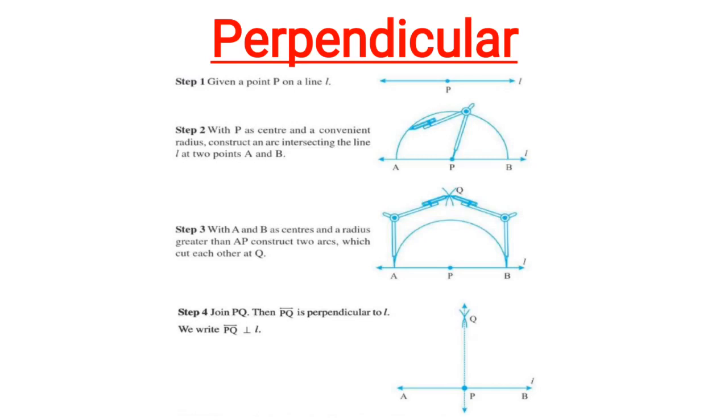Step 3: With A and B as center and a radius greater than AP, construct two arcs which cut each other at Q. Step 4: Join PQ. Then the line PQ is perpendicular to L. Thus we can write that line PQ is perpendicular to L. This is how we can draw a perpendicular to the given line.